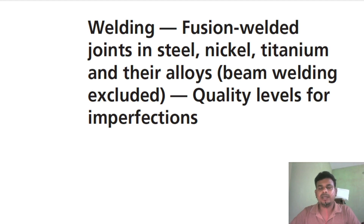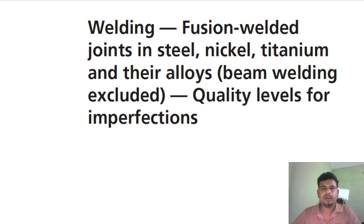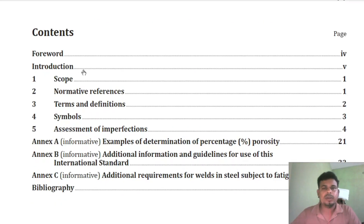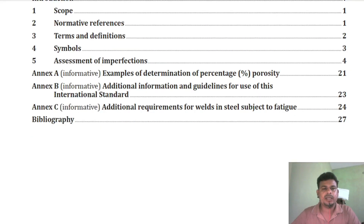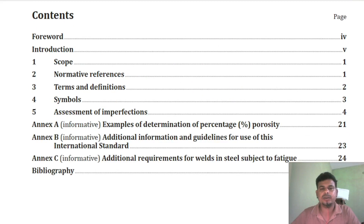This code book covers fusion welded joints in steel, nickel, titanium and their alloys. Beam welding will not be covered by this code book; beam welding is covered by another code book. The content for this code book includes: scope, normative reference, terms and definitions, symbols, assessment of imperfection, Annex A, Annex B, and Annex C.